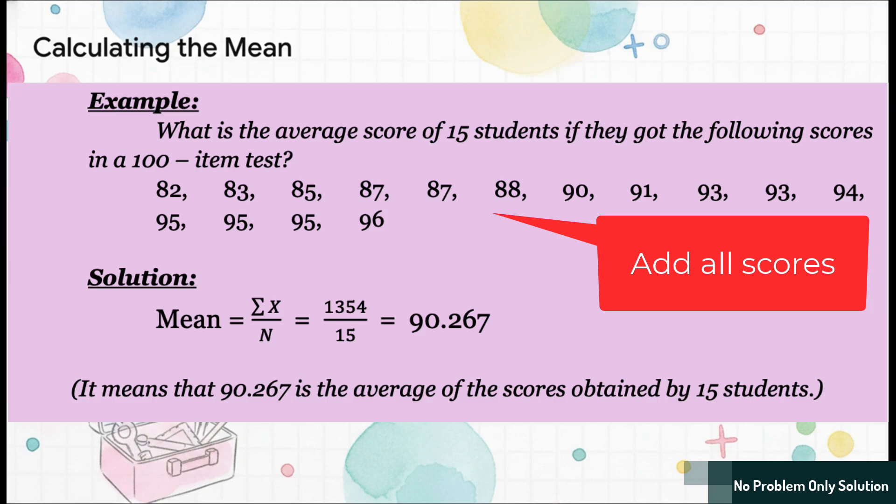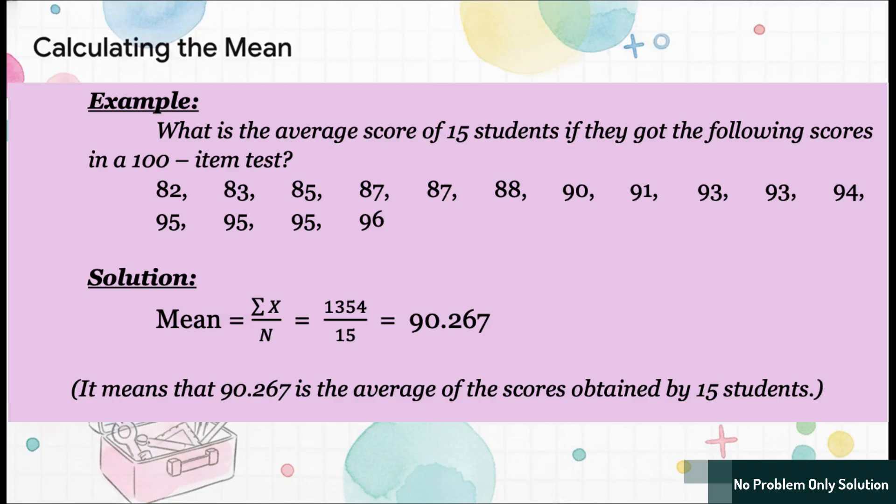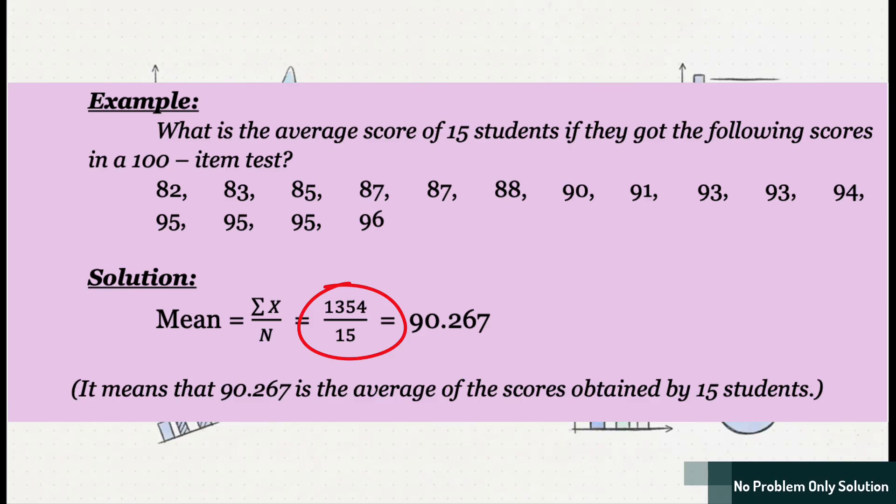Step one, we just add up every single one of those 15 scores. And that big Greek letter you see there, the sigma, that's just a fancy math symbol for add it all up. Then, once we have our grand total, we go to step two. We just divide that sum by 15, which is, you know, how many scores we have. And there we have it. After you do the math, you get 90.267.